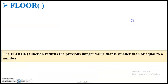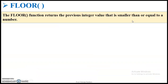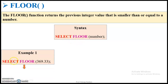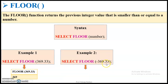Then comes the floor function. This floor function returns the previous integer value that is smaller than or equal to the number. The syntax is: SELECT FLOOR(number). For 369.33, the previous integer value is 369. For minus 369.33, the previous integer value smaller than it is minus 370, so it returns minus 370.